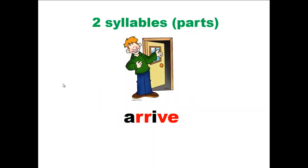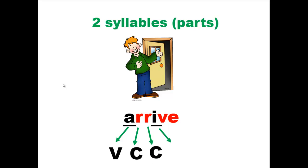Another word: arrive. We do have two vowel sounds. Let's check the pattern of the vowel and consonant letters in the word, starting with the first vowel sound: vowel, consonant, consonant, consonant, and another vowel sound. So the word should be divided between the consonants. The consonants in the middle are double consonants.